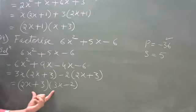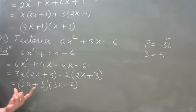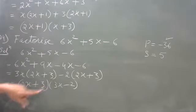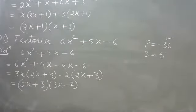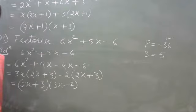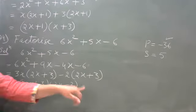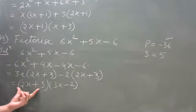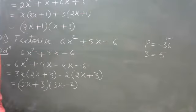If we want to find zeros of the polynomial, we equate each factor to zero individually. So 2x plus 3 equals 0 and 3x minus 2 equals 0 give the possible zeros of the polynomial.